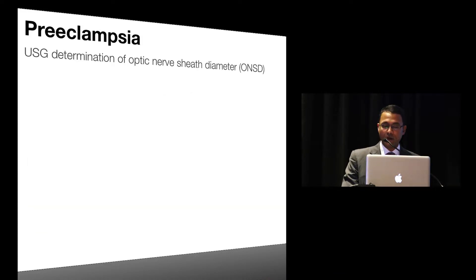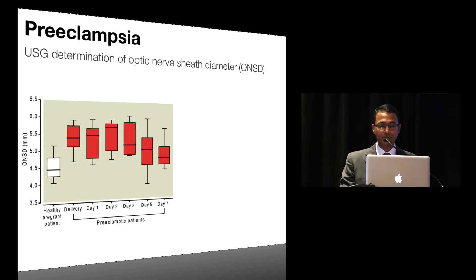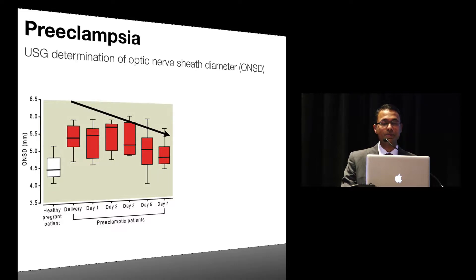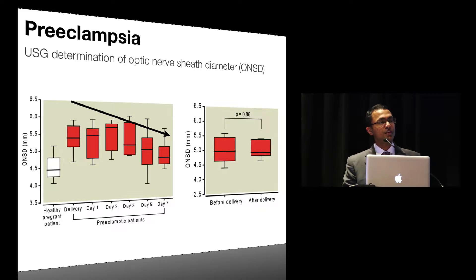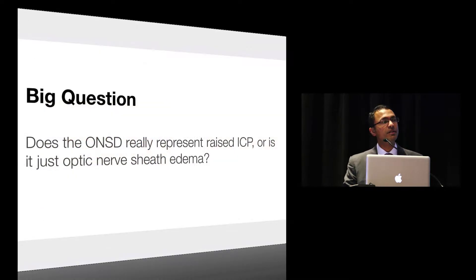The authors also tracked optic nerve sheath diameter in preeclamptic women for up to seven days postpartum. The median optic nerve sheath diameter decreased after the third postpartum day and reached near-normal diameter by about the seventh day. No such change was noticed in healthy term pregnant women, suggesting that optic nerve sheath diameter is reflective of preeclamptic physiology. The big question is: does optic nerve sheath edema truly represent raised ICP, or is it just reflective of the generalized increase in permeability seen in preeclampsia?